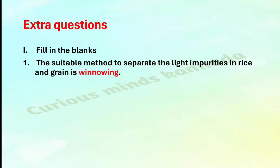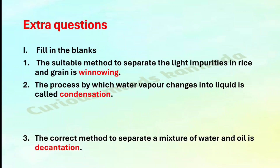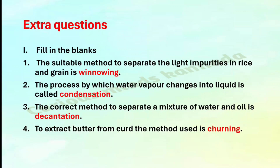Extra questions. Fill in the blanks. First: The suitable method to separate light impurities in rice and grains is winnowing. Second: The process by which water vapor changes into liquid is called condensation. Third: The correct method to separate a mixture of water and oil is decantation. Fourth: To extract butter from curd, the method used is churning.